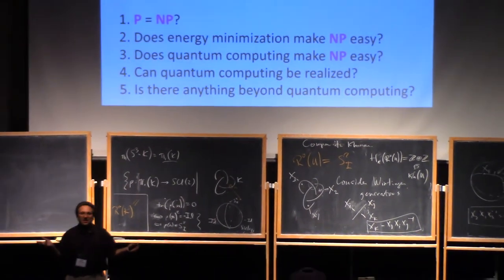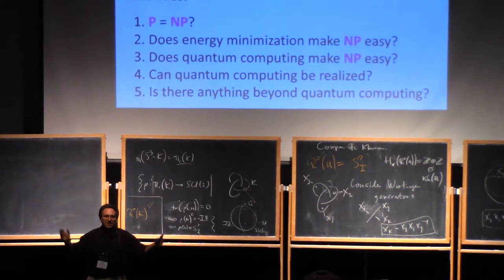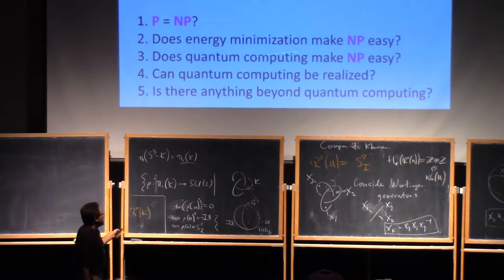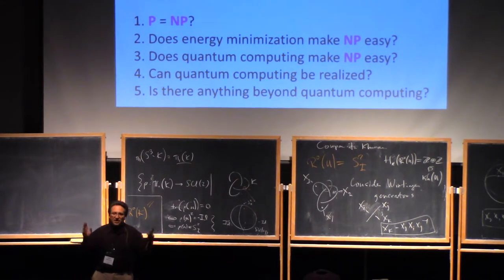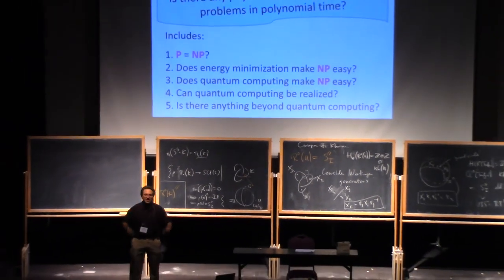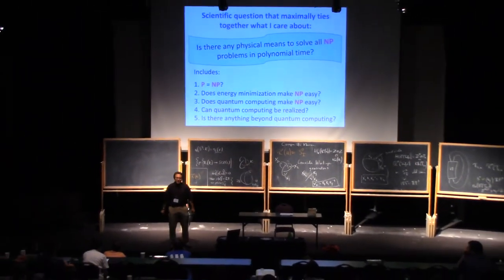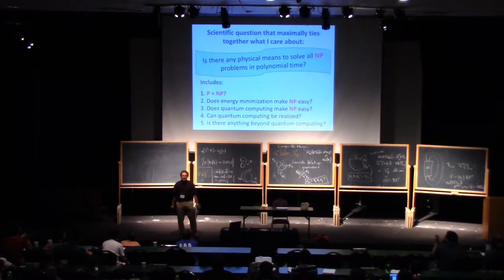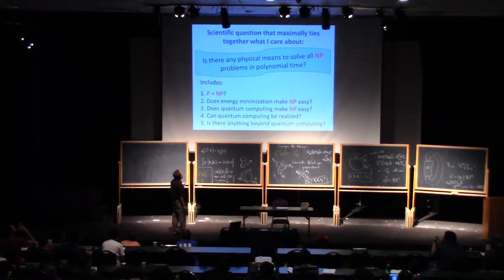Does nature just sort of magically make NP-complete problems easy? Can it do things that are exponentially hard for digital computers, even just in classical physics? And if not in classical physics, what about quantum mechanics? You've surely heard something about quantum computing — how does that change the picture? Unfortunately, many popular articles say things about what quantum computers would be able to do that are very exciting and appealing — and wrong, uncontroversially so. We'll talk about the current understanding of what a quantum computer would actually be able to do.